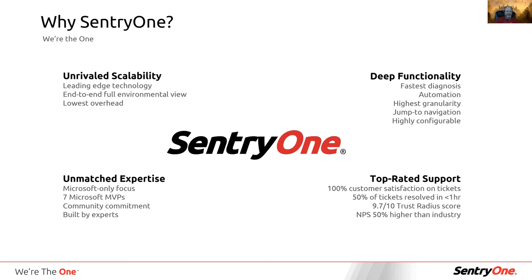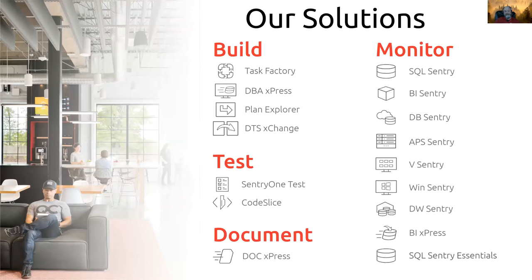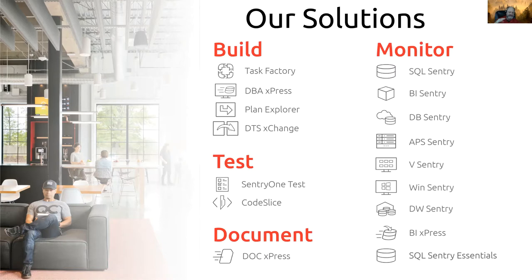What kind of products do we have? One very well-known product is Plan Explorer — a completely free product. I'll give you a quick view of it later as part of the demo. It makes tuning queries and reading execution plans much, much easier than what you could do with Management Studio or Azure Data Studio. It's so free we don't even ask for an email address when you download it. Our other two leading products are Century One Document — a metadata product that tells you all about your data dictionary, builds out information about what's in your enterprise, and does impact analysis and data lineage.